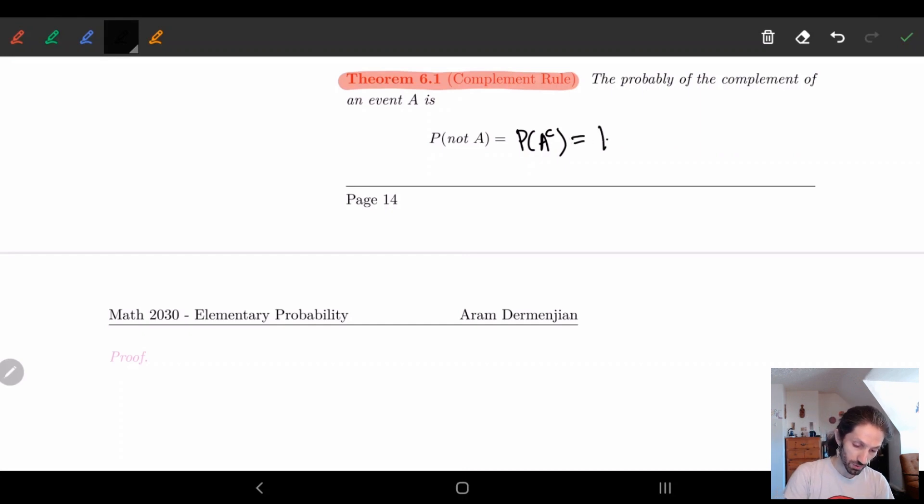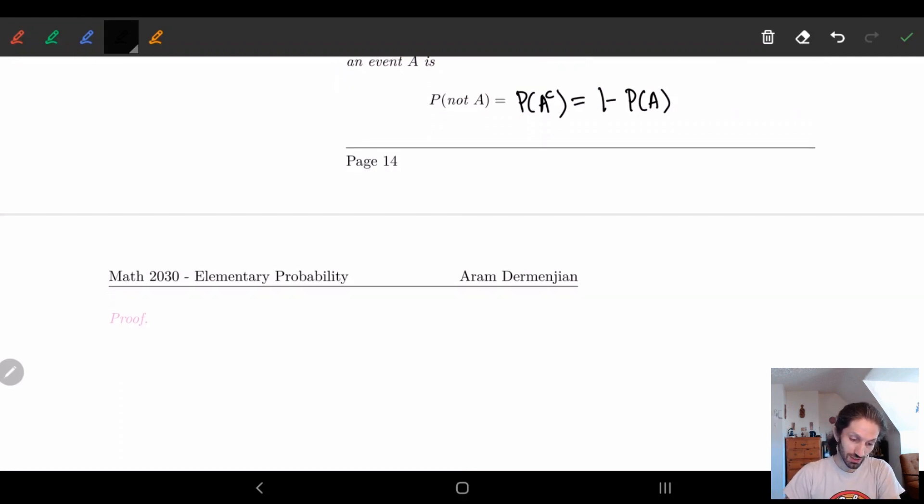And what we're going to want to show is we want to see that this is equal to one minus P(A). And so this is something we would expect. Like if I have some set A, then I really want the complement to be everything except for A. So one minus P(A) makes sense. So let's prove this. Let's show that this is true.